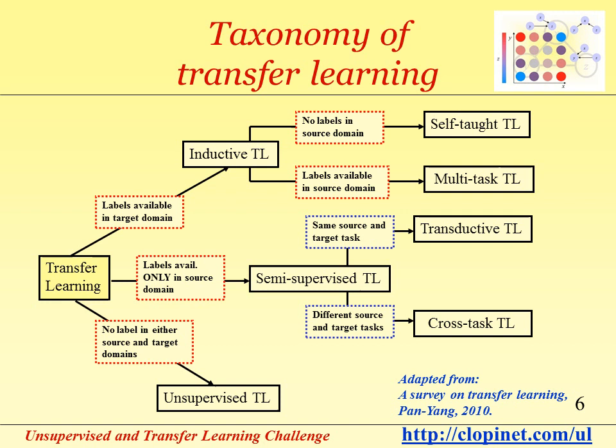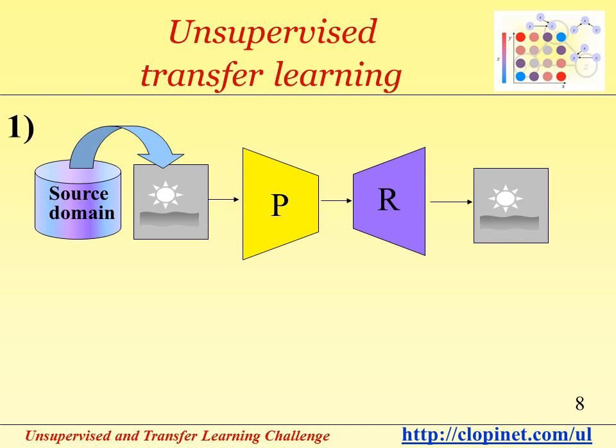We're going to be exploring this taxonomy starting from the bottom. First, unsupervised transfer learning. This is the case when no label is available in either the source or the target domain.